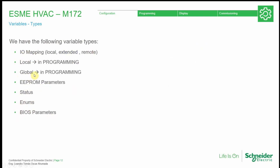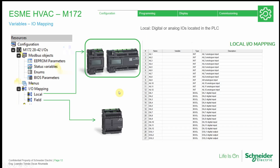Local and global variables are configured in the programming tab, so we will focus on those ones separately. In the IO mapping we have the local — they are only for the PLCs, both the small and the bigger one.